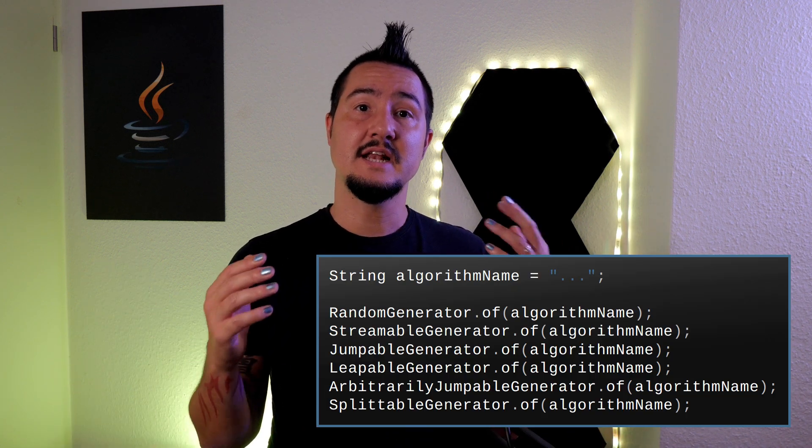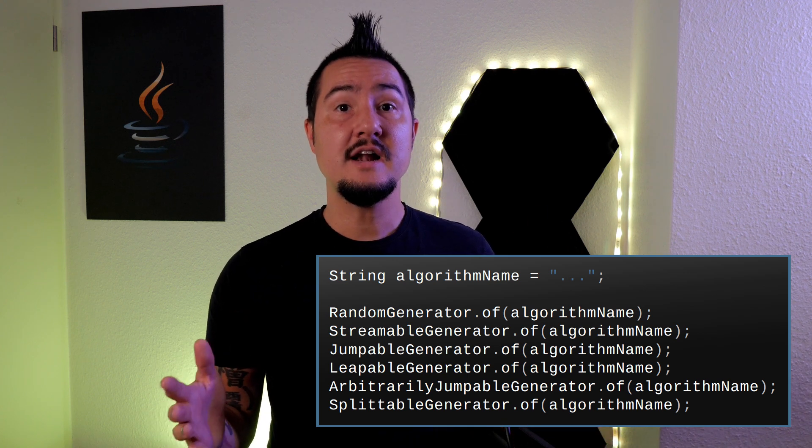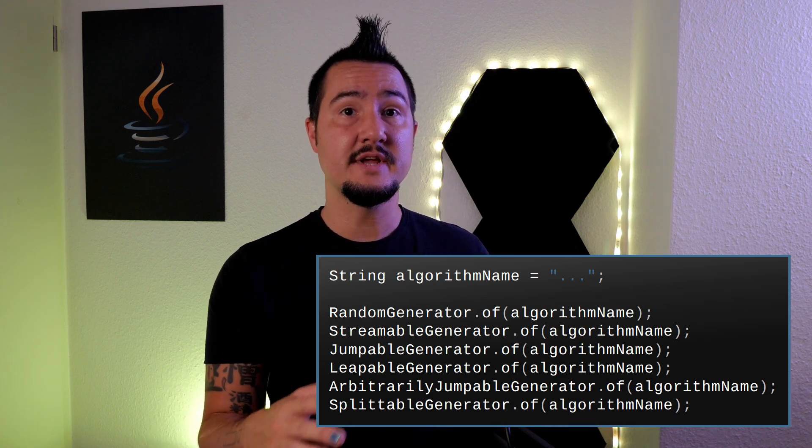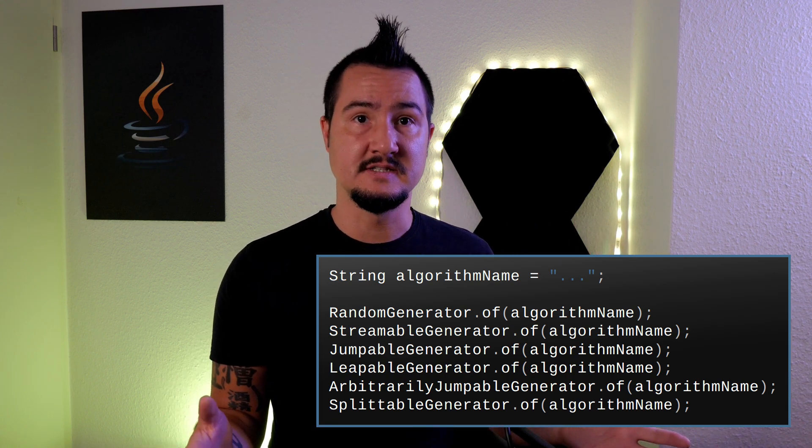No new public classes were added, so how do you get an instance of, say, LeapableGenerator? First of all, a few new algorithms have been implemented and more will likely come in the future. Generally speaking, all the new interfaces have a static of method that takes an algorithm's name as a string argument. If an algorithm of that name is implemented and it adheres to the interface it's called on, it will return an instance of it. Otherwise, it throws an IllegalArgumentException. So to create a LeapableGenerator, you can call LeapableGenerator.of("Xoshiro256++").